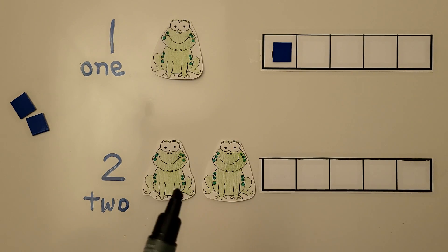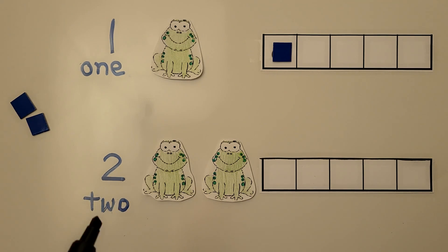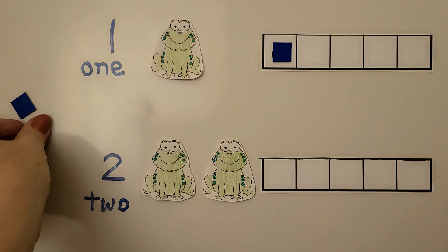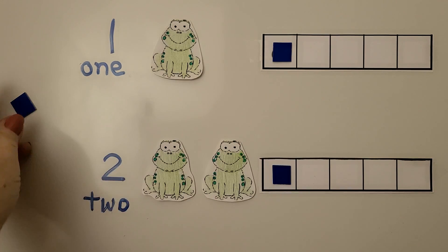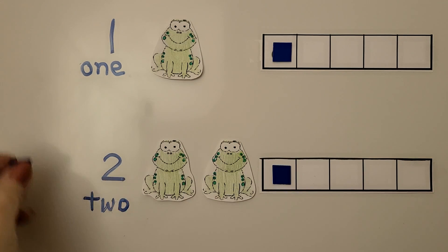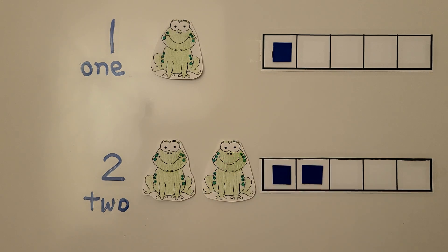Here we have two frogs. One, two. Here's the number 2. Here's the word 2. We can use counters to represent the two frogs. We put one counter into the 5-frame, then two counters into the 5-frame. Two counters for two frogs.